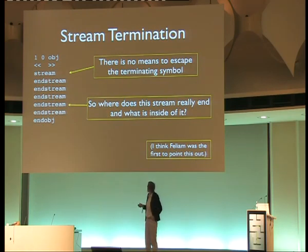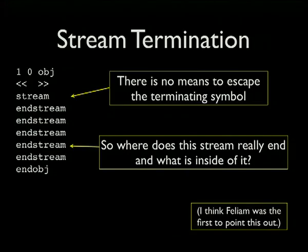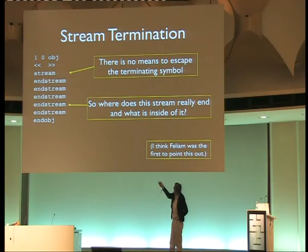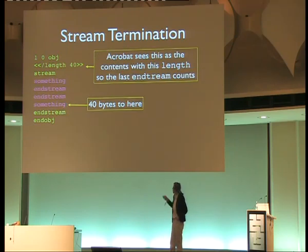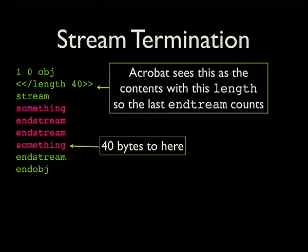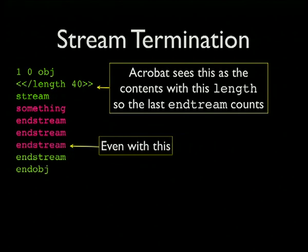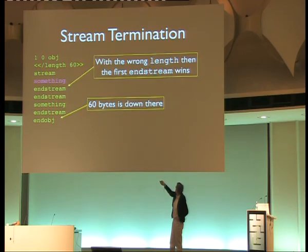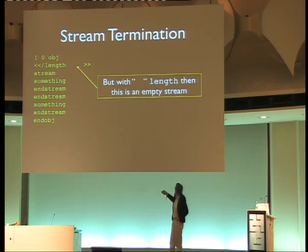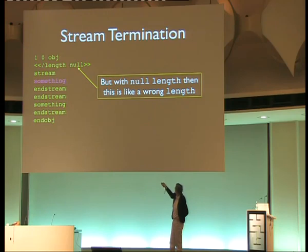There's also no way of escaping the endstream token if it appears inside a stream. So where does a stream actually end? If you say there are 40 bytes in the stream, those 40 bytes are parsed as the content. You can even have 'endstream' appear inside the data if the length field points past it. If you leave the length out entirely, it effectively becomes a null object — though strangely, if you explicitly put null there, it still stops at the first endstream token.